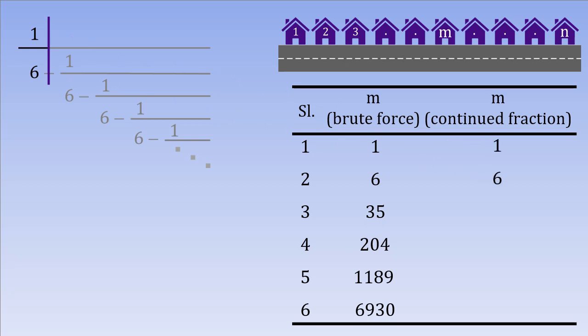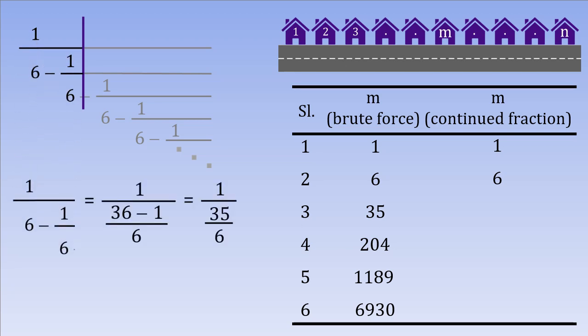At the very first level, the numerator gives the first value of M. And the denominator gives the second value of M. So far so good. Let us see what happens at the second level. The fraction simplifies to 6 over 35. And sure enough, 35 was our third value for M.